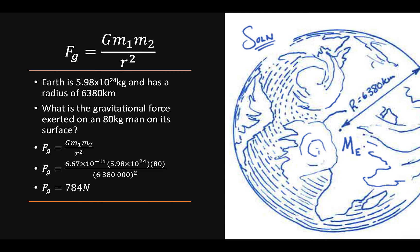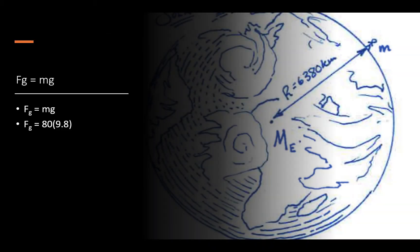We also use our formula F sub g equals mg. Plugging in our 80 kilogram mass and using our gravity as 9.8 newtons per kilogram, we find that we also get 784 newtons as our force gravity.